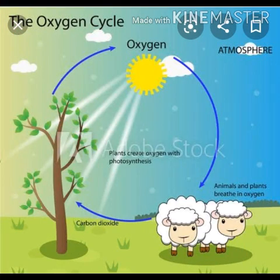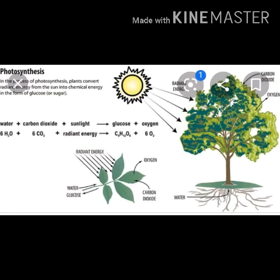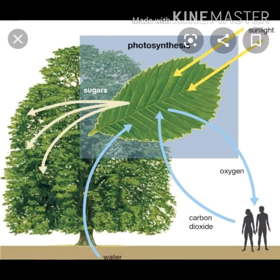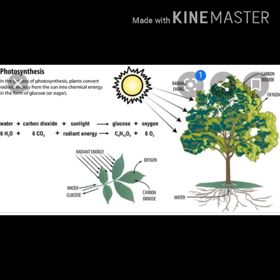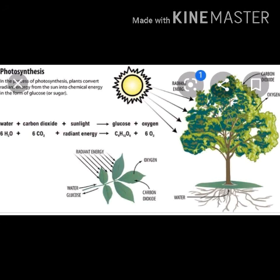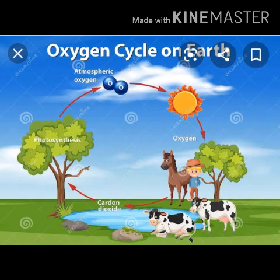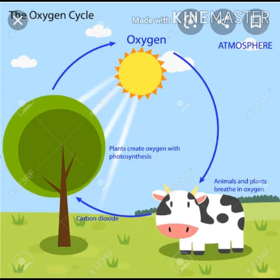Now moving on to the oxygen cycle. The percentage of oxygen in the air remains almost constant at 20.9% by volume. This is because oxygen is removed from the atmosphere mainly by plants, animals, and decomposers during respiration, by fossil fuels during burning — both processes producing carbon dioxide and water — and by sediments in seas and oceans.